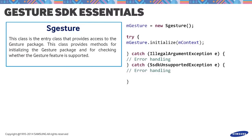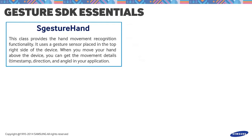For SSDKUnsupportedException, the important exception messages to handle are: vendor not supported for non-Samsung devices, and device not supported for devices which do not support gesture. All exception messages indicate whether an installation or an update is recommended or required. The SGestureHand class provides the hand movement recognition functionality.